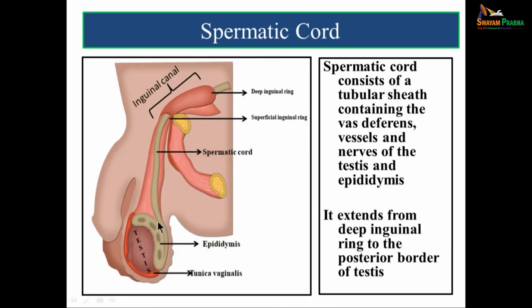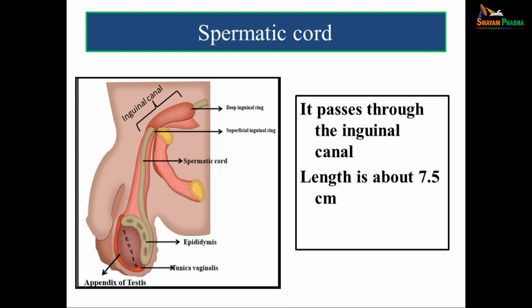The spermatic cord is the one which suspends the testes. It consists of a tubular sheath containing the vas deferens, vessels, and nerves of the testes and epididymis. It extends from the deep inguinal ring to the posterior border of the testes. The spermatic cord passes through the inguinal canal, and its length is about 7.5 centimeters.